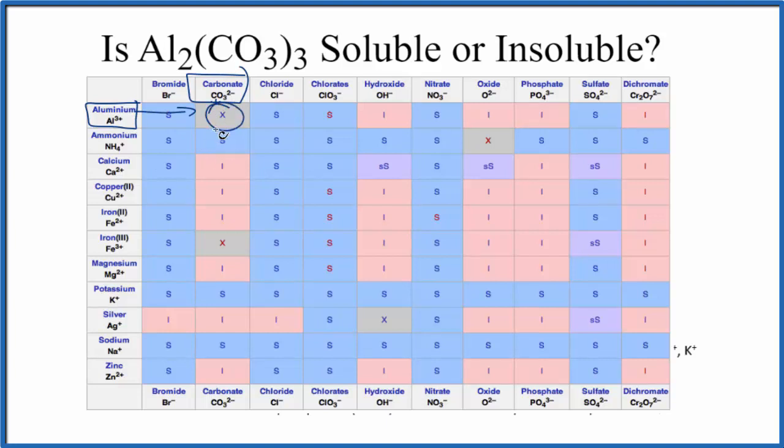What this means is that it actually decomposes, it reacts with the water. So when the aluminum carbonate is put in water, it's not really soluble or insoluble. It doesn't dissolve or stay undissolved. It actually reacts with the water. So in this case, we can't really say whether it's soluble or insoluble because aluminum carbonate will react with the water.